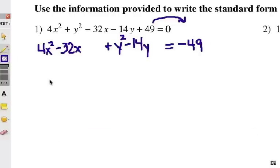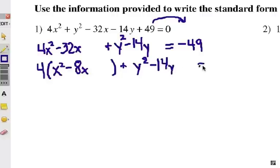Before I go to the next step, I need to see if I can factor out a greatest common factor from the x group or the y group. I look at the x group and notice that 4 is a common factor and I need to factor that out. That's going to give us x squared minus 8x. Leave a little gap for completing the square. The y squared minus 14y, we can just leave that alone. Nothing to factor out there, but remember to leave a gap. On the right I have negative 49.